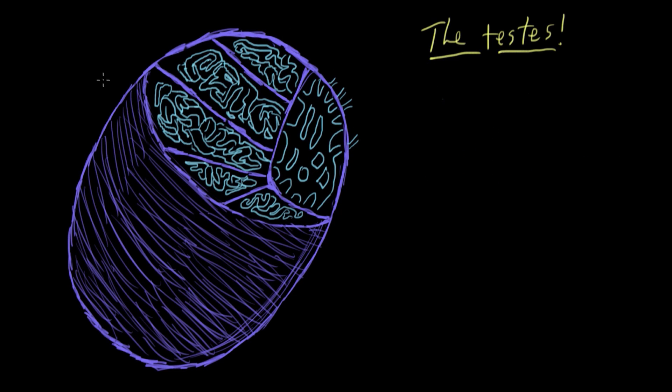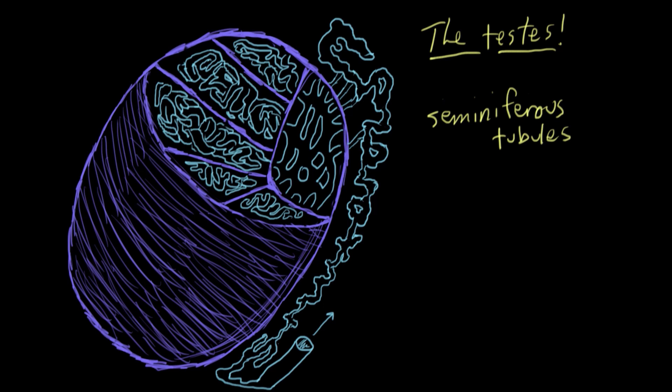Inside, we find this really convoluted set of tubes in light blue here. These are called seminiferous tubules. The sperm are actually made inside these tubules, and the testosterone is made by cells called Leydig cells that hang out on the outside of these tubules. The sperm are made in the seminiferous tubules, and then they travel out of the tubules and into the epididymis to mature and get ready to head off via ejaculation to try to find an egg to fertilize.